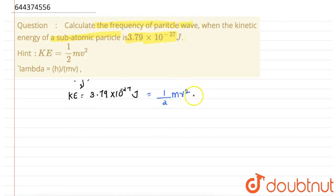Now what we are going to do is multiply this equation by mass and divide it by mass. So this will give the equation as 3.79 × 10^-27 equals half m²v² divided by m.